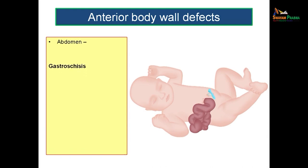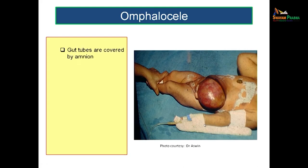Now let us discuss some clinical aspects. When the anterior body wall does not form properly, some structures will be lying outside the abdominal cavity when the baby is born. One such defect results in a condition known as gastroschisis. In gastroschisis, the abdominal viscera lie outside — usually or preferably on the right side of the umbilicus. You can see the umbilicus and the coils of intestine lying outside the abdominal cavity, usually on the right side.